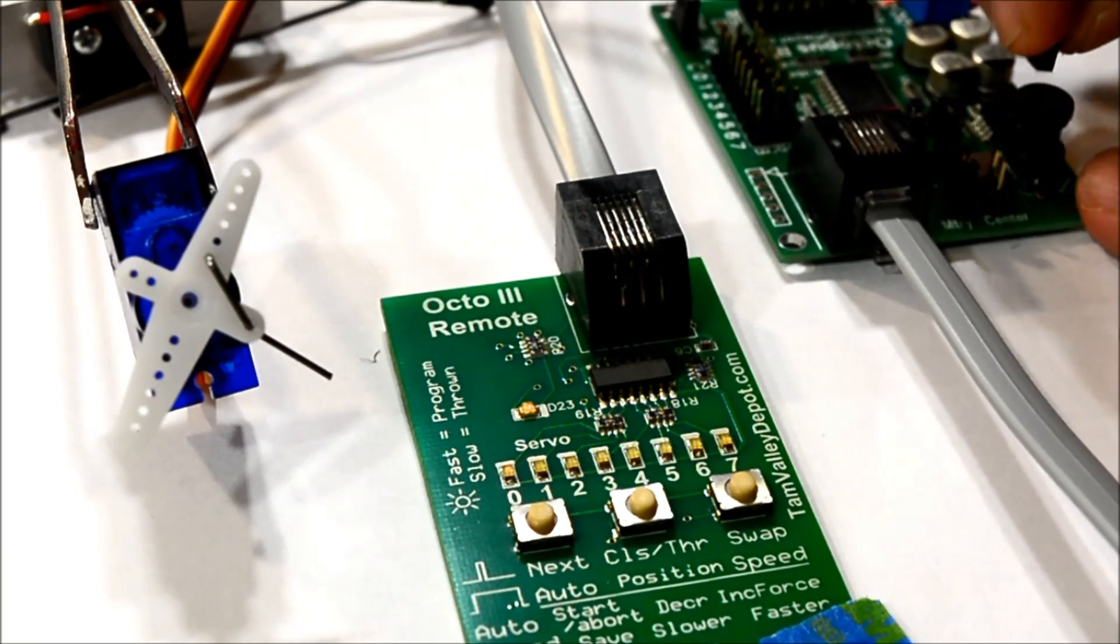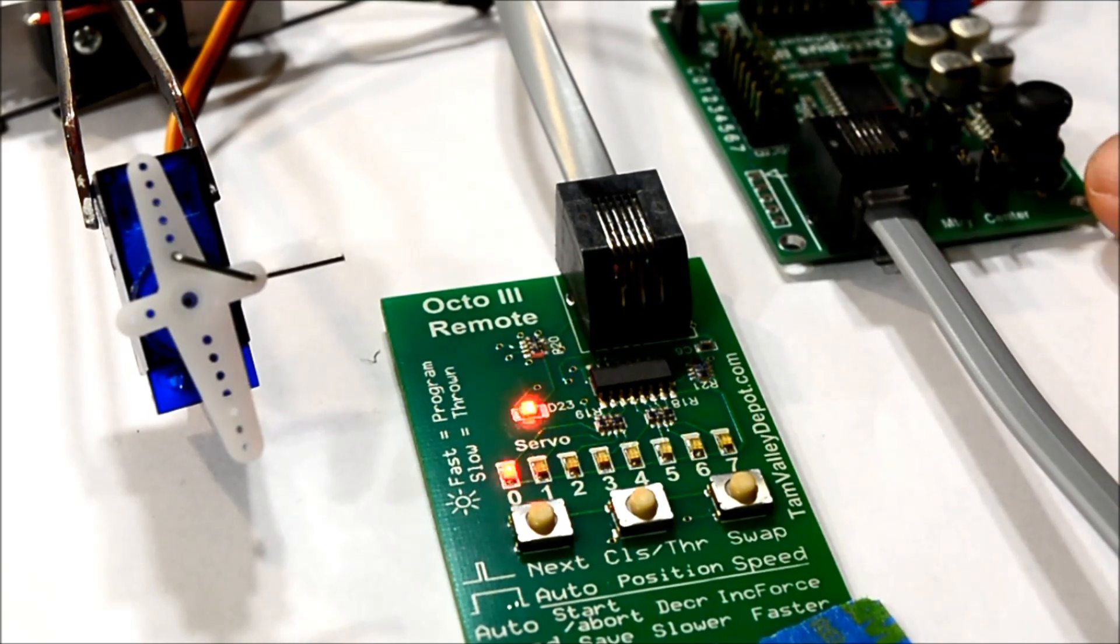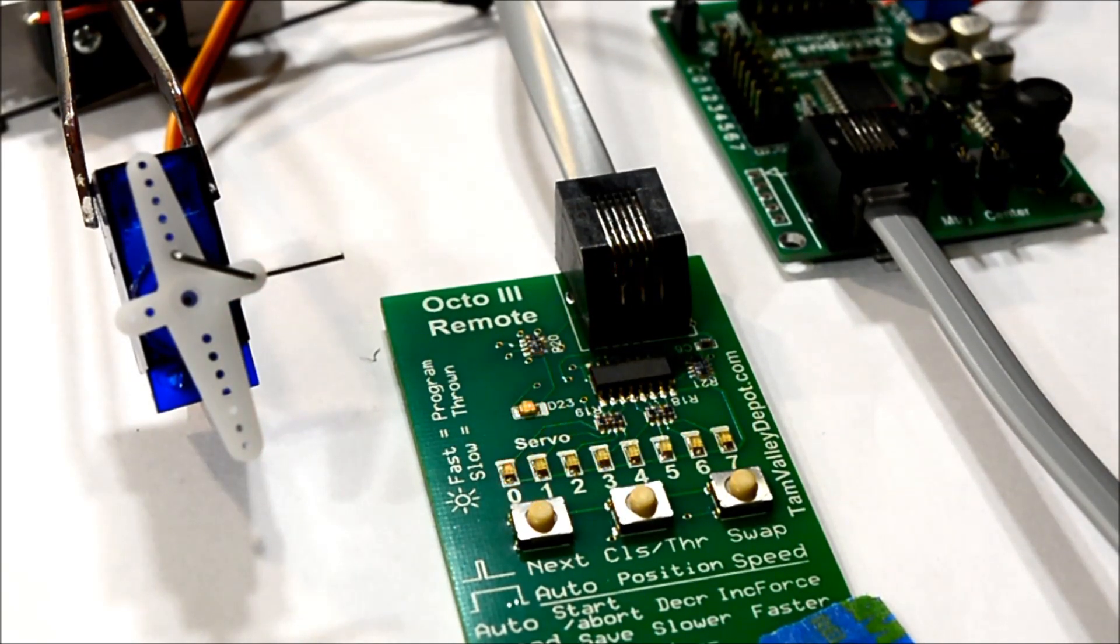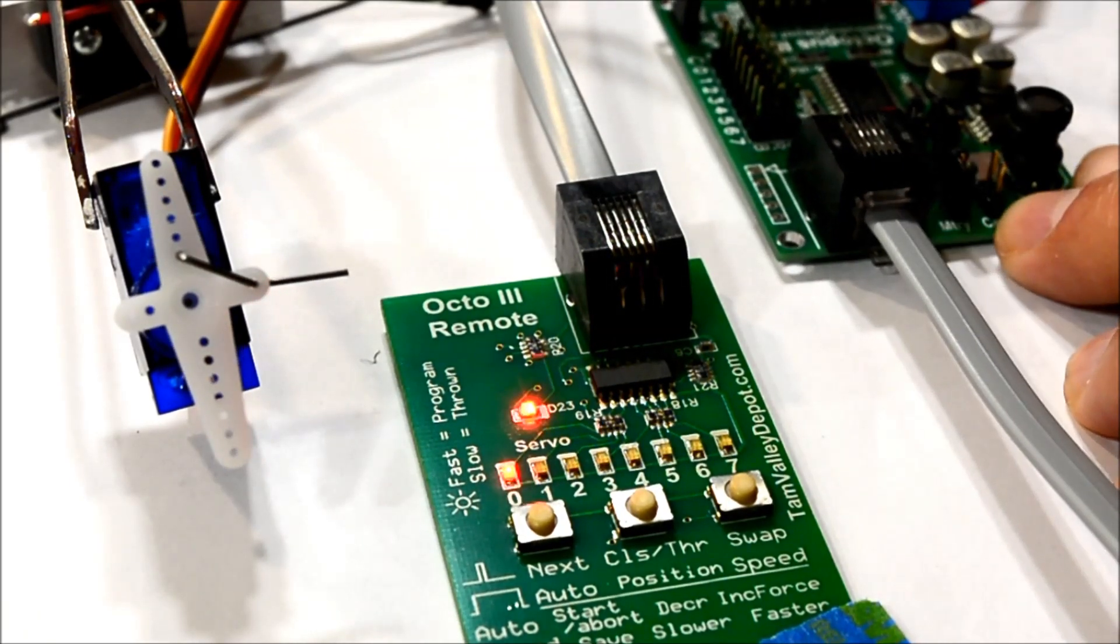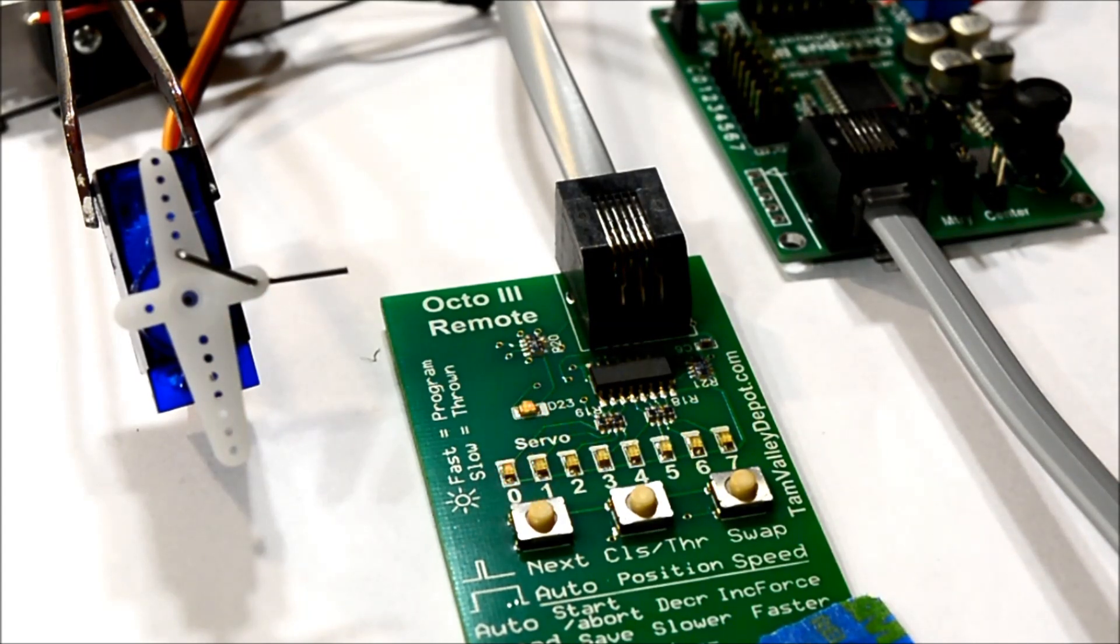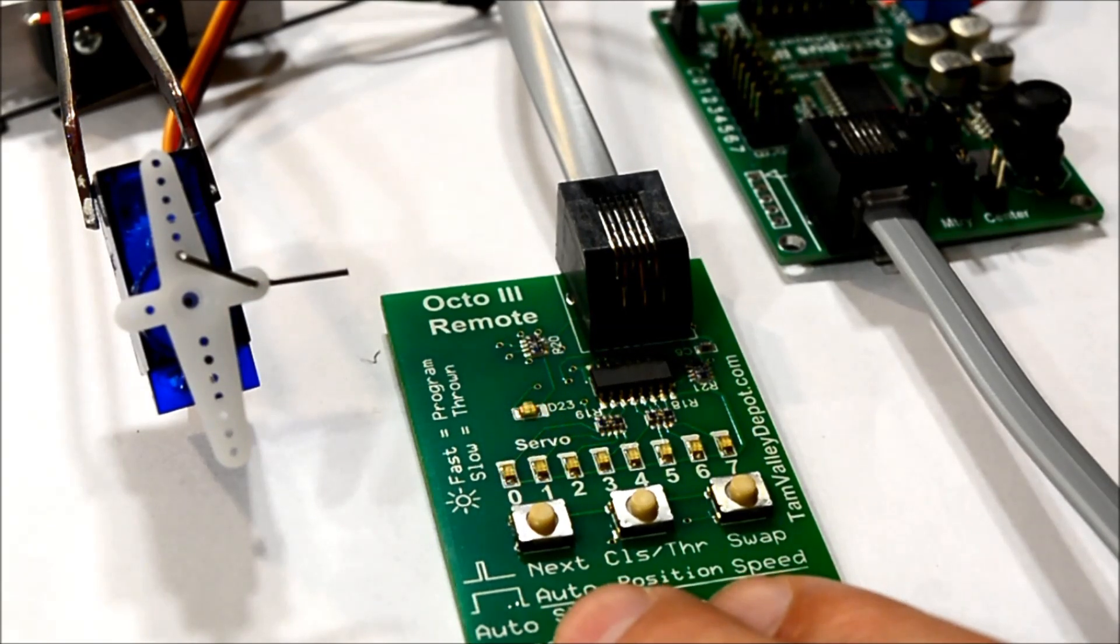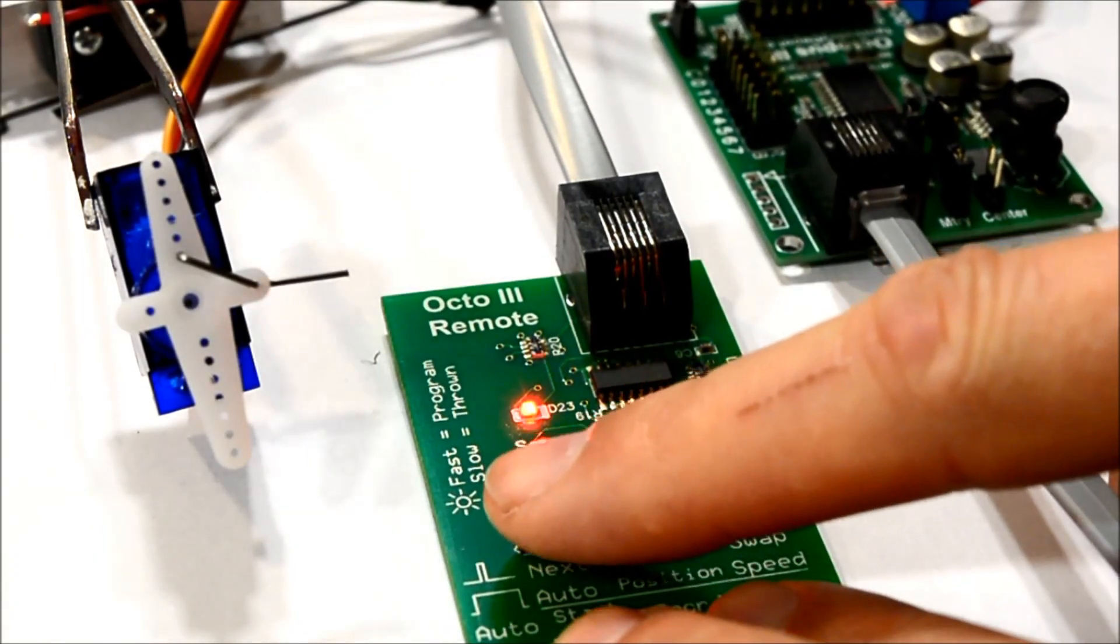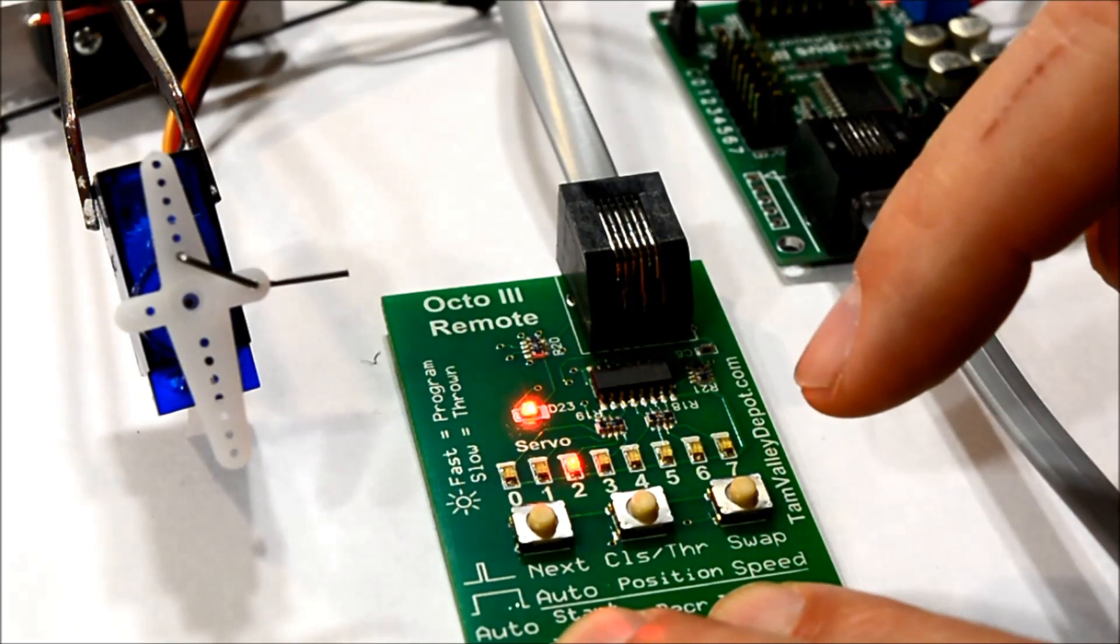So first step, we'll put on the center jumper that moves all the servos to their center position. Looks like we got this one lined up fairly well to start with. So we know that we're centered. Now I have this one hooked up on servo number two and right now the zero is flashing. So we'll go one and now we're on two. So now we can begin setting our positions.